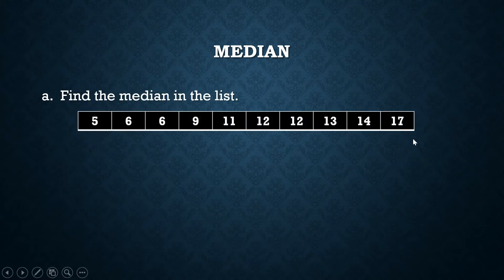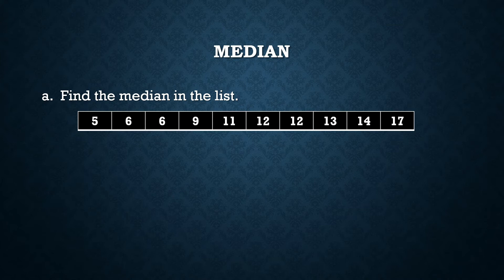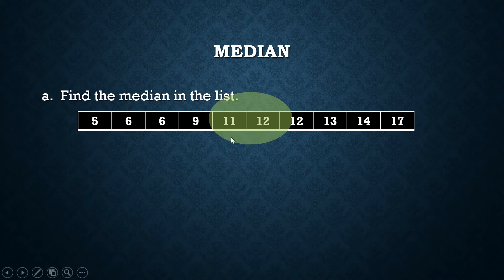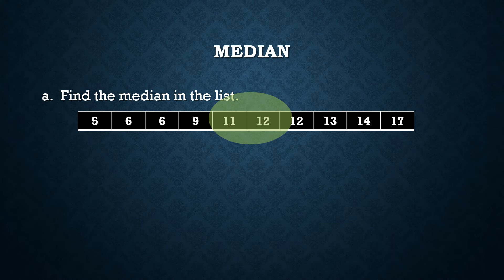To find the median, we must first check if this is a ranked list — meaning the elements are sorted in ascending or descending order. This list has been ranked from lowest to highest, so we can look for the median. We have 10 elements, so folding it in the middle will not fall at a particular number. We look for the average of the two middle values: the average of 11 and 12 is 11.5. That is the median.